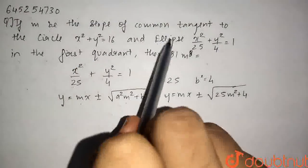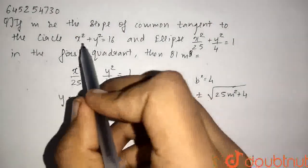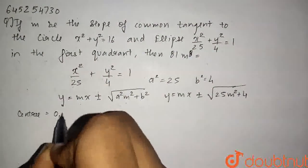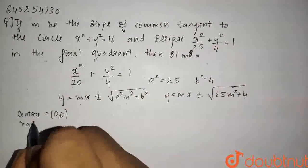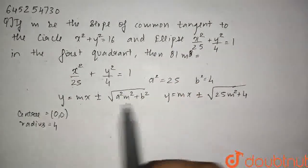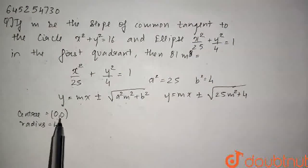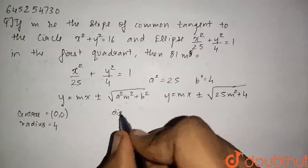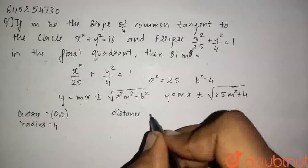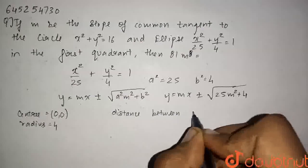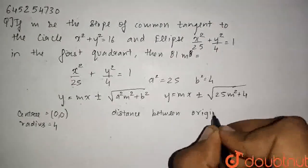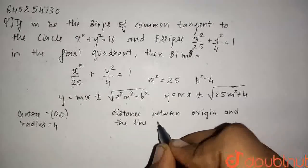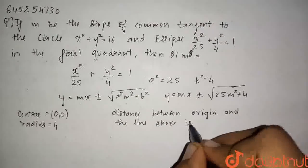Now we are given that this is also the equation of the tangent to the circle. The circle has center (0, 0) and radius 4. Since this line is also tangent to the circle, the distance between the center and this line should be equal to the radius.